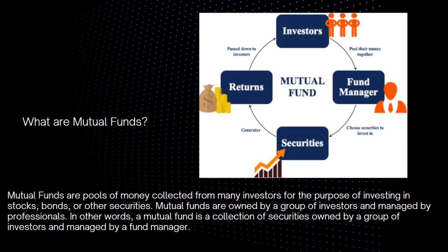In GCash there are five investment options you can choose from. You basically just need a phone with a Globe number — or another number that can receive a verification code — and an email. There is a questionnaire you have to complete honestly, because that's how they gauge what kind of investor you are: aggressive, moderate, or conservative.